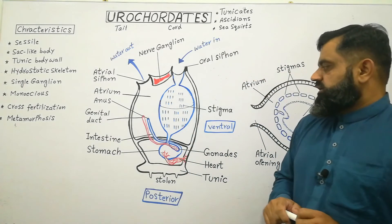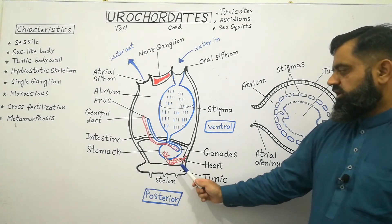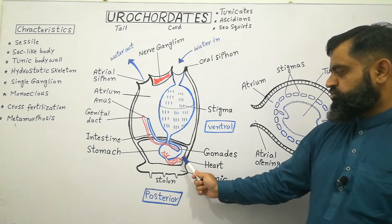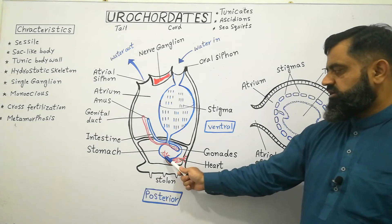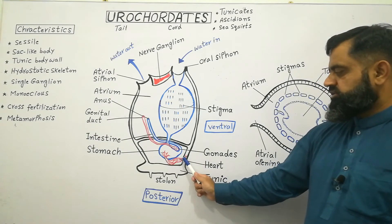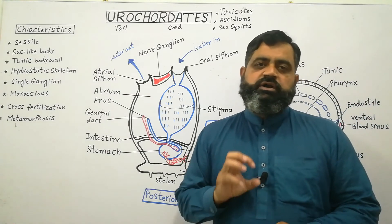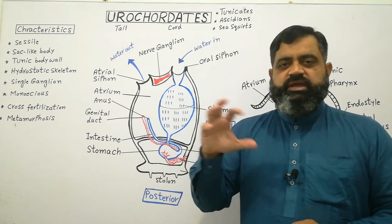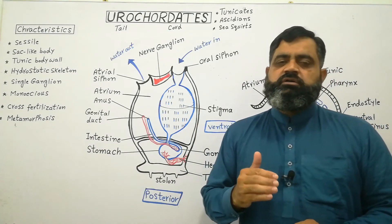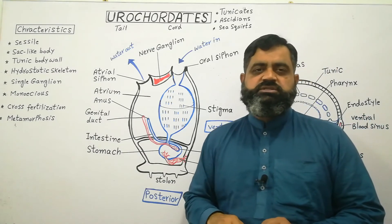Looking at the circulatory system, on the posterior side of the body there is a heart with two blood vessels — one towards the ventral side and one towards the dorsal side. When the heart pumps, blood moves towards the ventral and dorsal sides of the body. When the heart contracts again, blood comes back into the heart from the blood vessels, so blood moves in and out of the heart. Their actual mechanism of circulation is still under study.